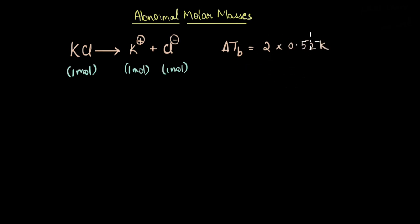This value of 0.52 K refers to the boiling point elevation constant for water and it tells us how much the boiling point of the solvent, in this case water, would increase for each molar increase in the concentration of the solute.